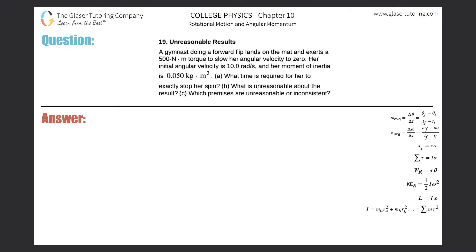Number 19, unreasonable results. A gymnast doing a forward flip lands on the mat and exerts a 500 newton-meter torque to slow her angular velocity to zero. Her initial angular velocity is 10 radians per second and her moment of inertia is 0.05 kilogram meter squared. Part A: what time is required for her to exactly stop her spin?